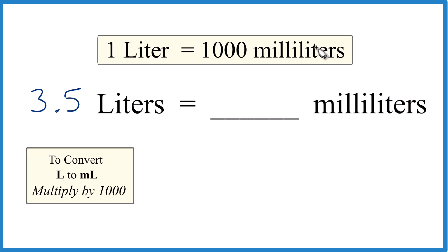So if one liter is a thousand milliliters, we have 3.5. We really should have 3.5 times this number here. So our answer should be a lot greater than a thousand. Let's do it this way. When we have liters going to milliliters, we multiply by a thousand.